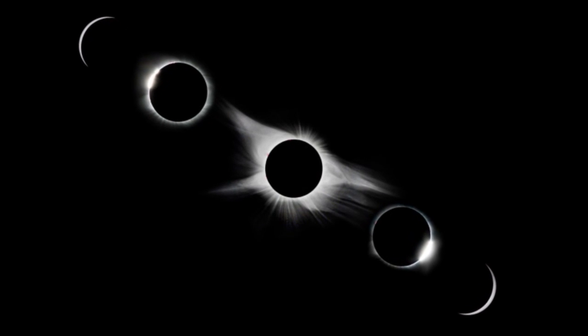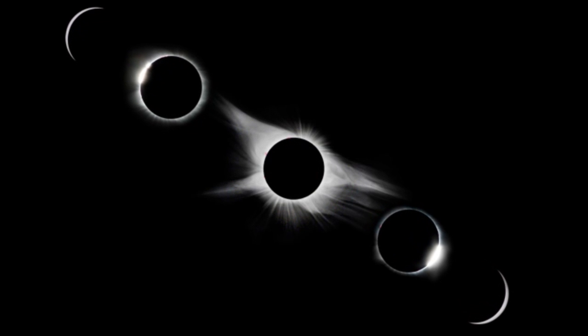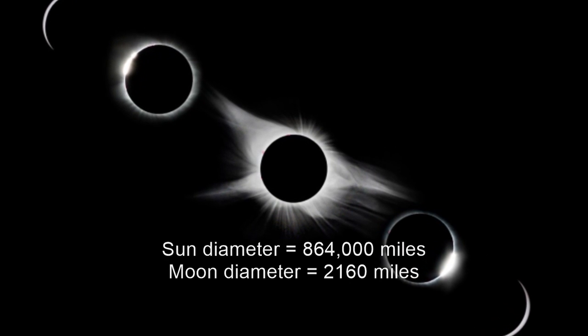The diameter of the Sun is 400 times larger than the Moon. It is also 400 times further away.